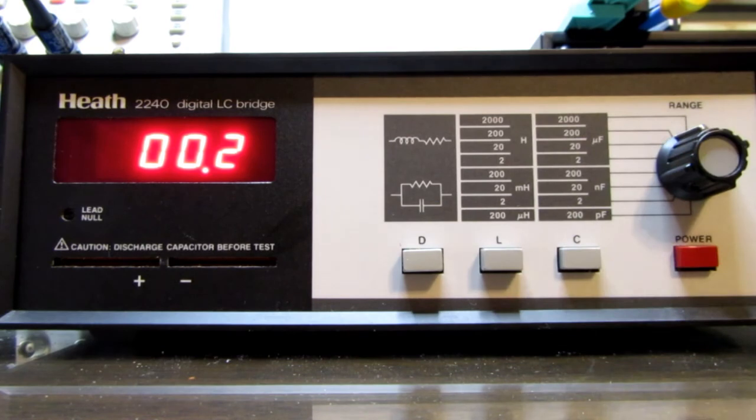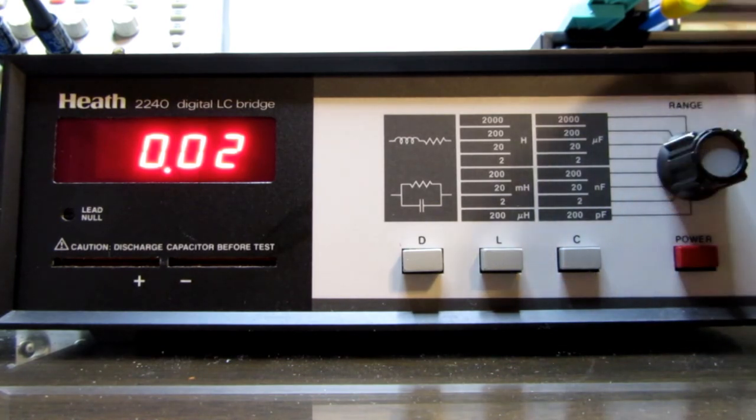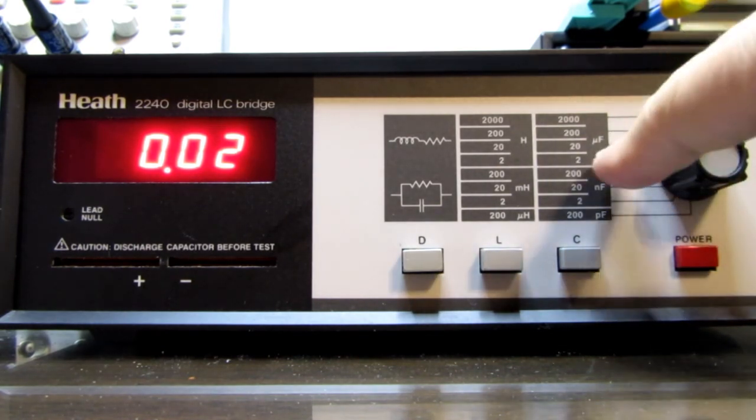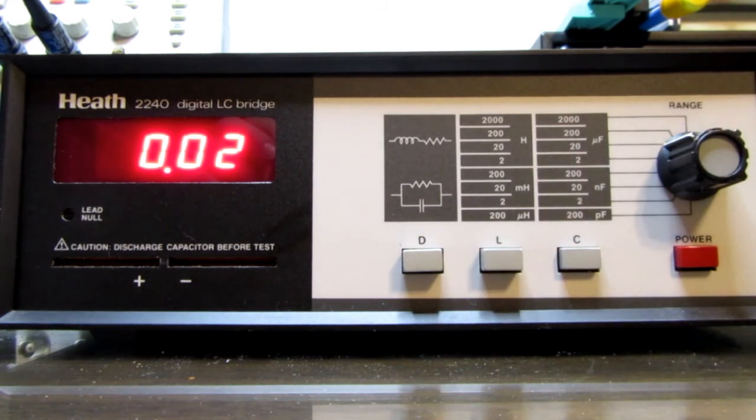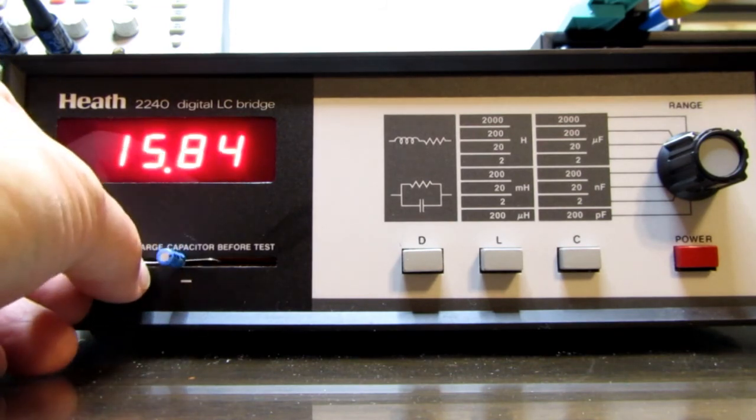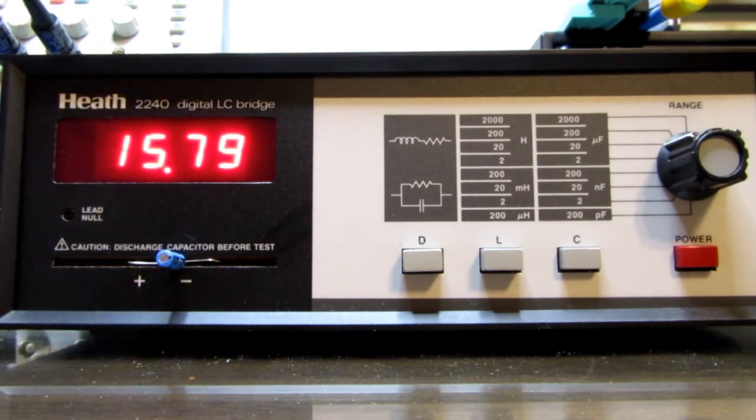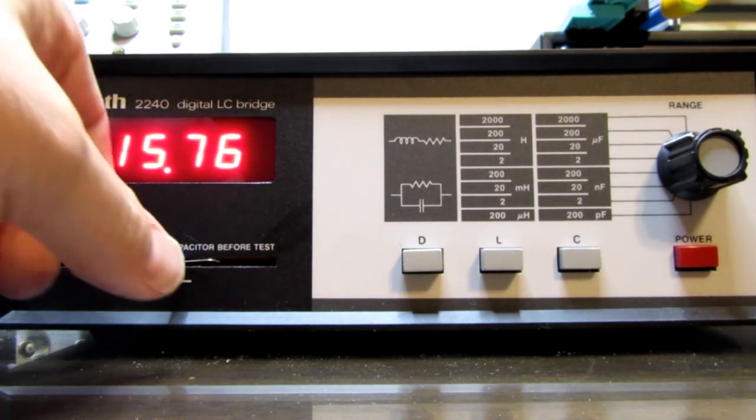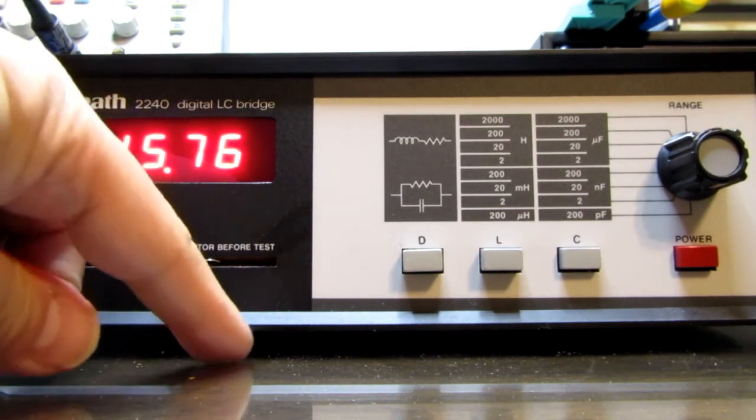This is a 15 microfarad part, ostensibly, so I put it on the 20 microfarad range. Make sure I get the pluses and minuses set up correctly. And that's reading 15.79. This component from Heathkit was specified as 15.67 when it was originally shipped. So again, we're still pretty close. Either the component's drifted or the meter has slightly.